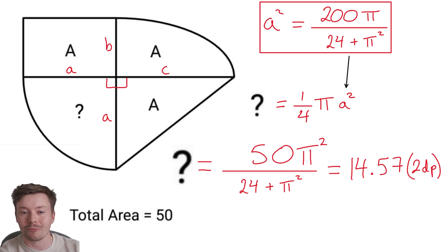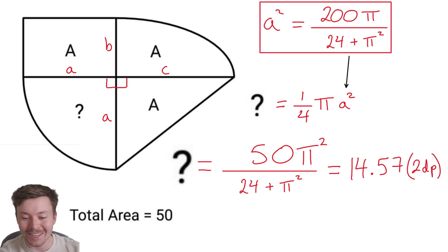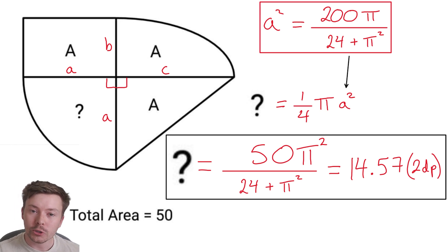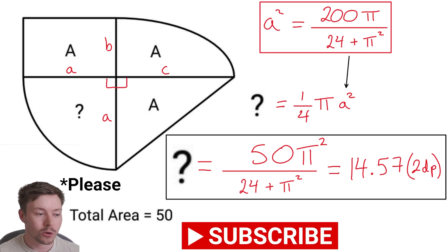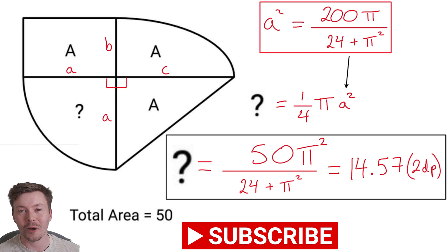Just be careful when you calculate that on a calculator that you don't get a rounding error by rounding something earlier on — use the answer button. You should get 14.57, so well done if you did. If you enjoyed this problem make sure you like the video and subscribe to the channel — I put up a new problem solving video every single week. I hope you enjoyed that one and I'll see you next week. Till then, bye bye.